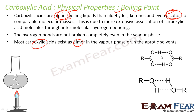If you compare carboxylic acid and alcohol, the extent of hydrogen bonding is much higher in carboxylic acid. Why? Because in carboxylic acid you have oxygen, hydrogen — three things taking part in hydrogen bonding — whereas in alcohol you have only two. So the extent of hydrogen bonding is more in carboxylic acid.